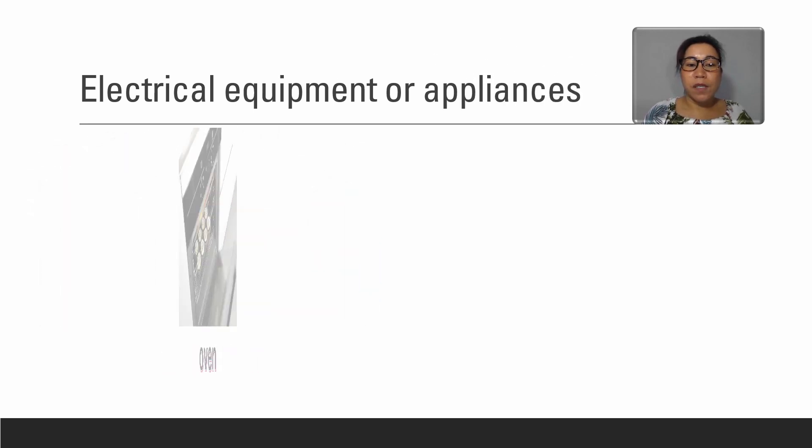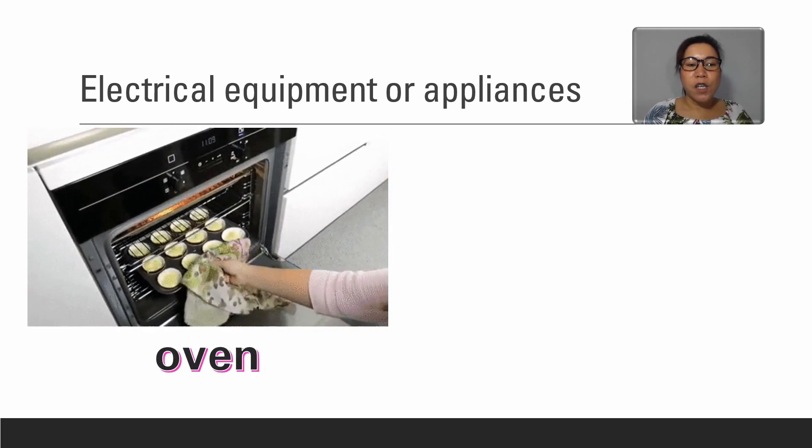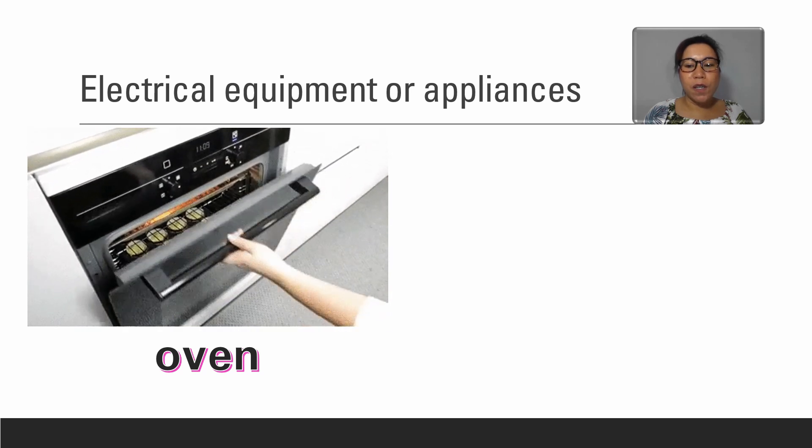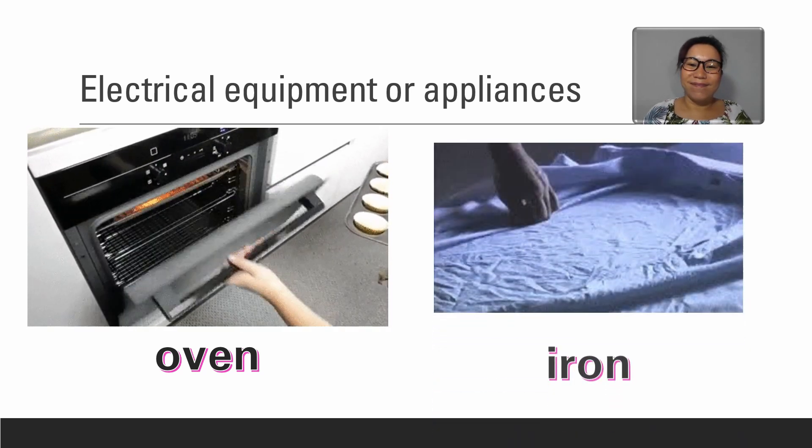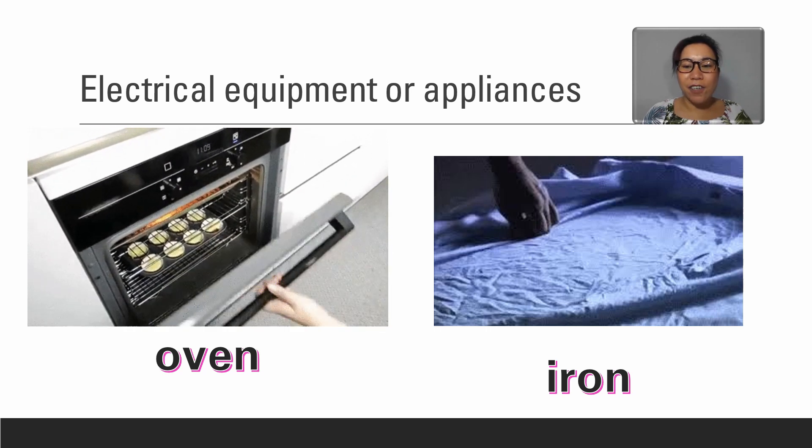Also, we have electrical equipment or appliances in our house that produce heat. Like oven. We use the heat of the oven to bake or cook. And the heat from our iron.